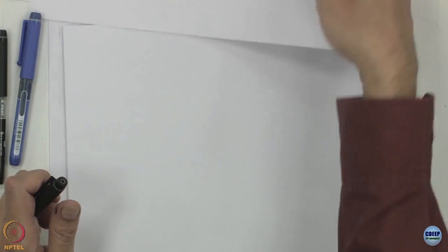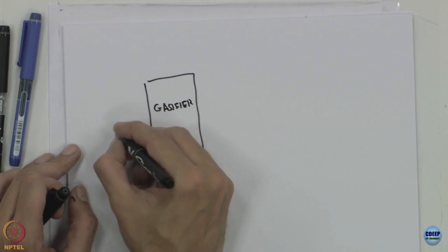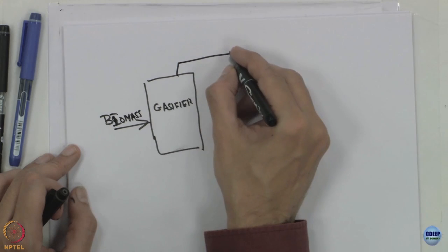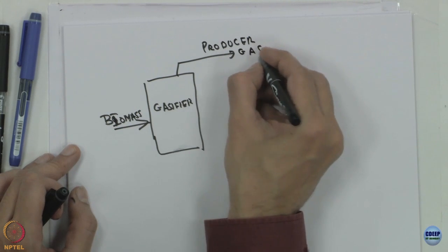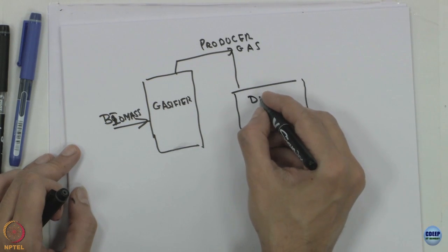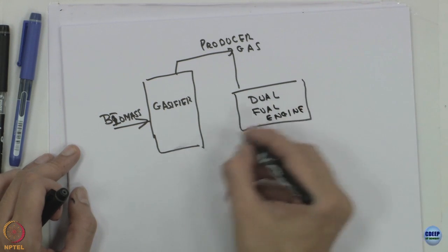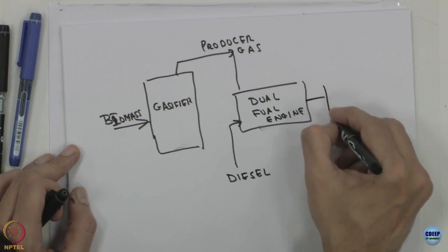Let us quickly look at option C, which is the biomass gasifier. Here we have a gasifier where we fire biomass and get producer gas. This producer gas goes to a dual fuel diesel engine — it could also go to a dedicated spark ignition engine — but the dual fuel engine also consumes a certain amount of diesel, and this is converted to drive the pump.